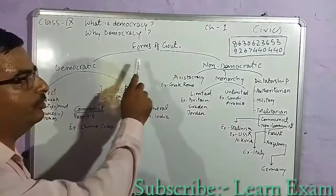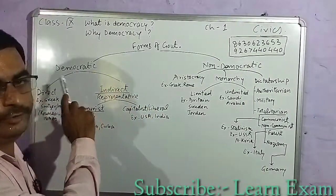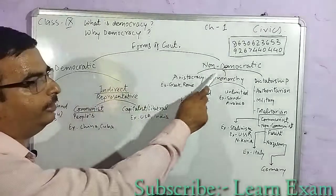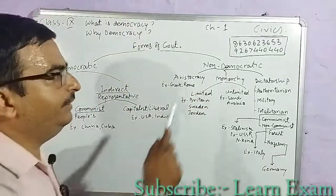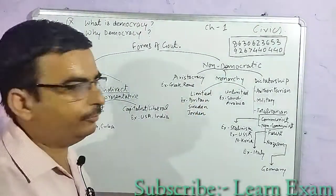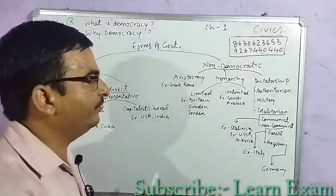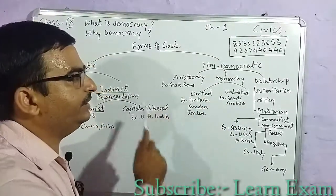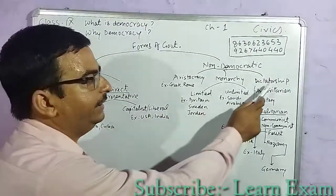We will divide forms of government into two categories: democratic forms of government and non-democratic forms of government. We can divide non-democratic forms of government into three major types: aristocracy, monarchy, and dictatorship.